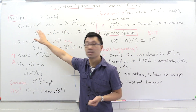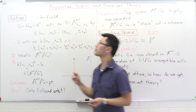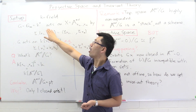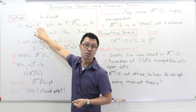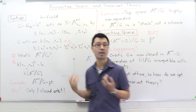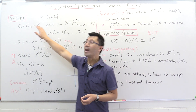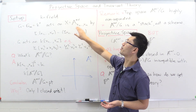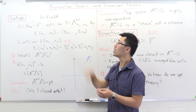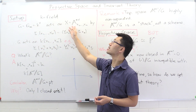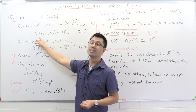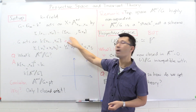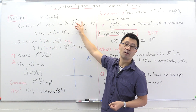So let's see what our setup is. As usual, we'll start with some field K, and the group G is the multiplicative group of non-zero scalars inside K. This group acts on n+1 dimensional affine space with variables x0 up to xn. It acts by scaling: if you have a non-zero scalar zeta, you scale all the coordinates by the same amount to give a new element of this affine space.